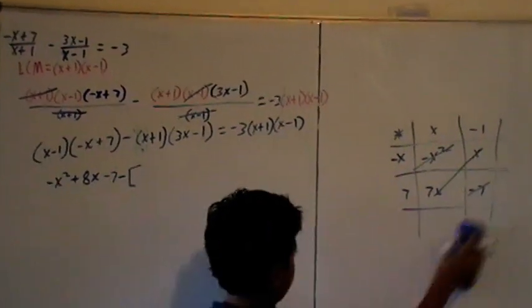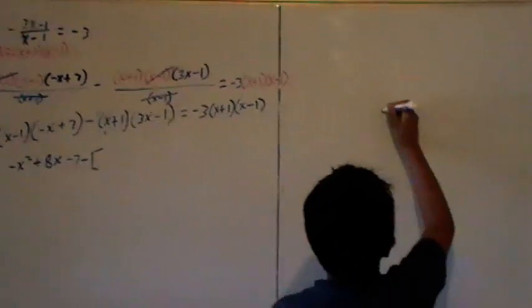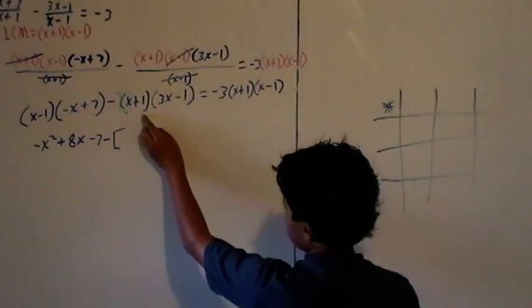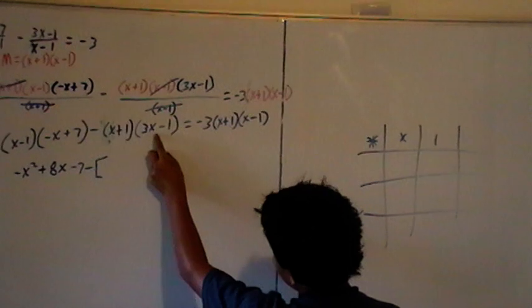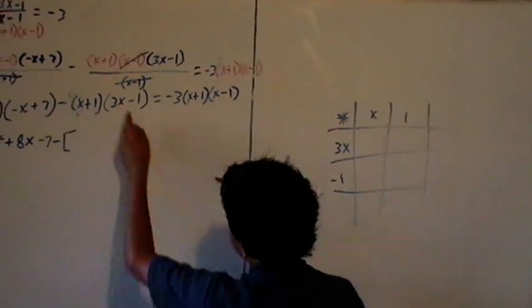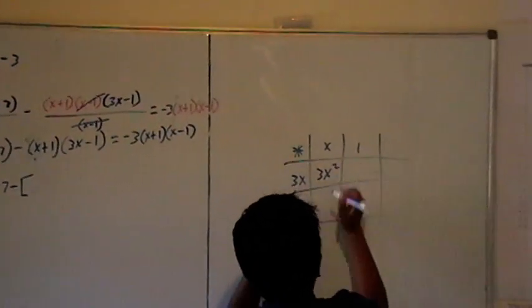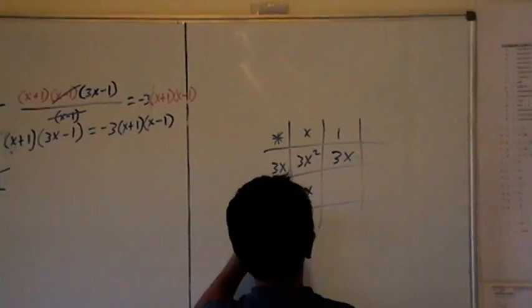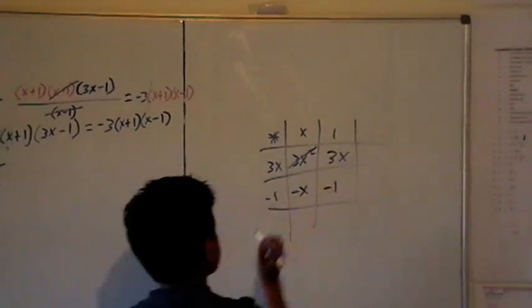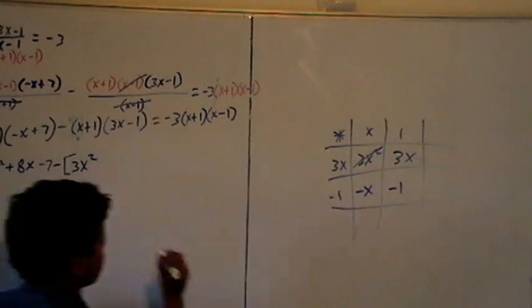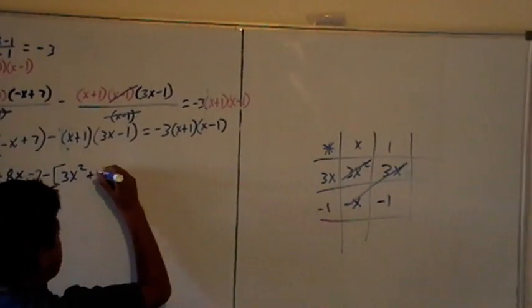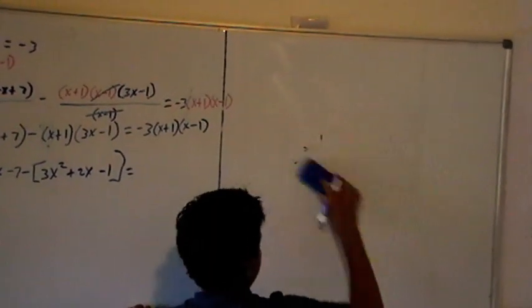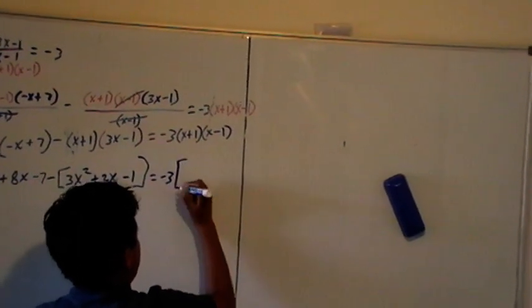Minus, write square bracket. Now I'll do that bracket using the lattice method. x plus 1, so x and 1, and 3x minus 1. 3x times x is 3x squared. 3x times 1 is 3x. Minus 1 times x is minus x. Minus 1 times 1 is minus 1. Now add the diagonals: 3x squared. We'll close the bracket. And 3x minus x is 2x and 1. Then close the bracket.